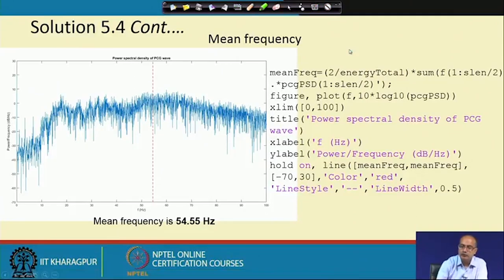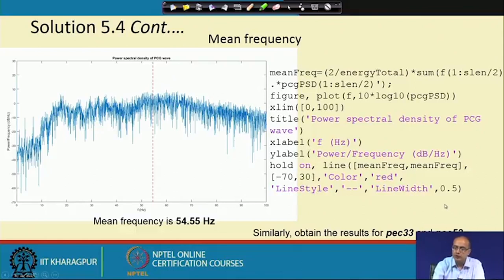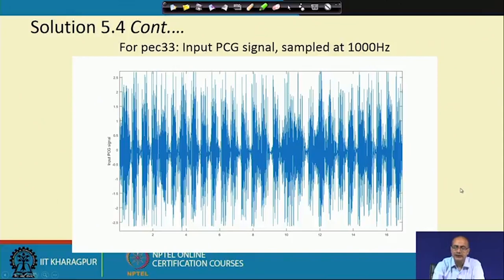Let us go for the other signals to appreciate how the spectrum and the mean frequency change, and along with the spectrum, how the energy within the band 100 to 300 also changes. We compute all these variables for PEC33 and PEC52. Here is PEC33—it looks like it has more jagged or more random appearance, however such visual measurements could be often wrong.